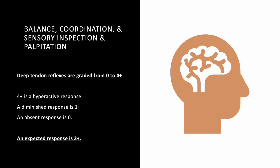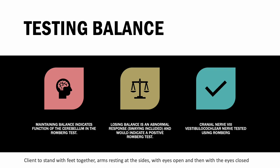For deep tendon reflexes, the expected normal response is 2+. Reflexes are graded on a scale of 0 to 4+: 4+ is hyperactive, 1+ is diminished, and 0 is absent. Know what each level means, what causes dysregulation, and recognize what a hyperactive response looks like — that would be a 4+.